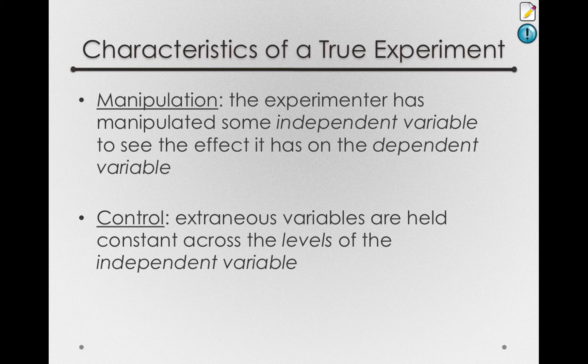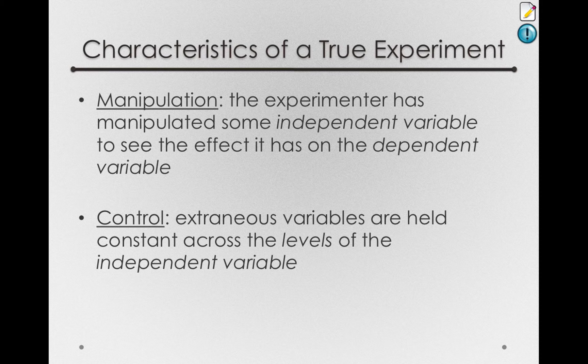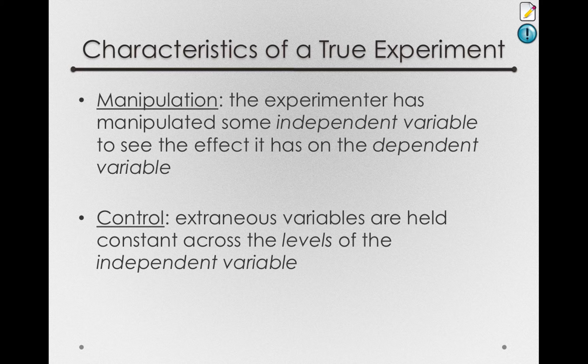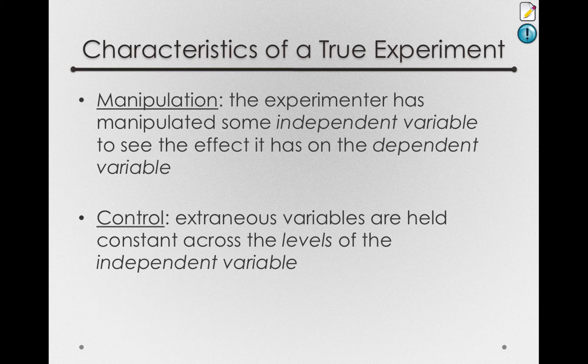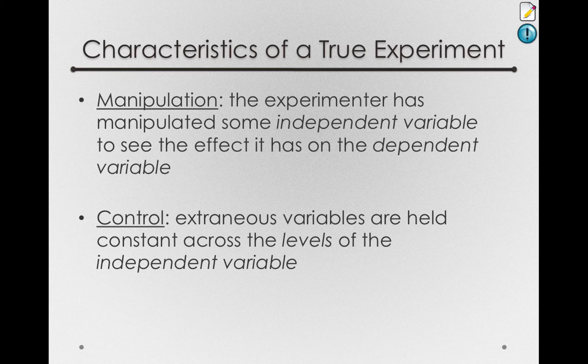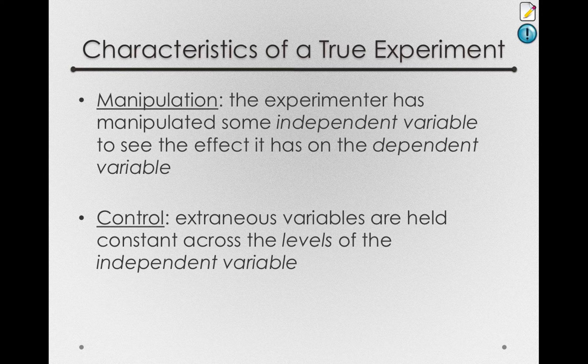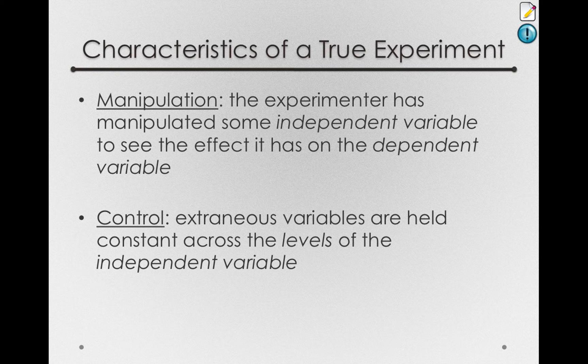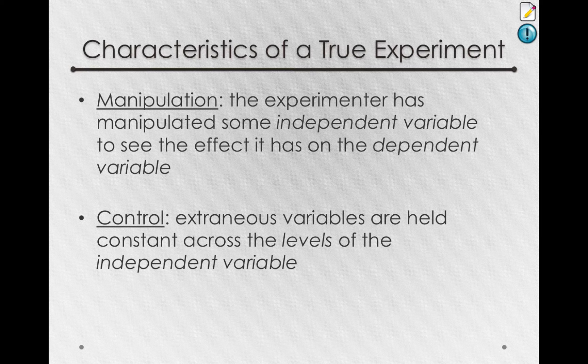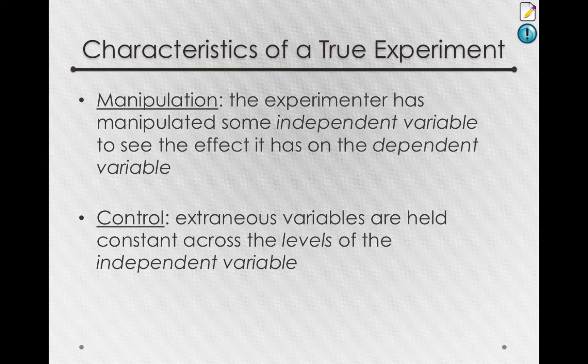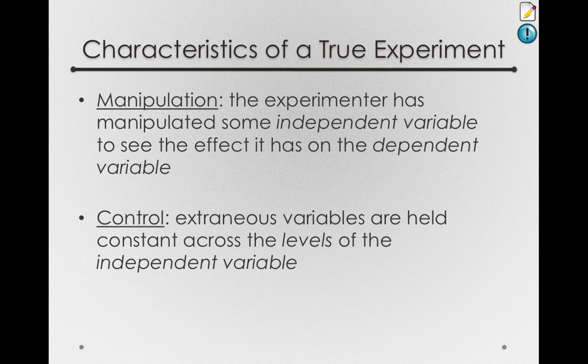Remember, the levels of the independent variable are just the conditions we have, so whether somebody got caffeine or not before the exam. What we're stating here is that we hope every other variable that relates to exam score is pretty much the same in our group of students who got caffeine and the other group who didn't. In that way, we have controlled the extraneous variables so that we get a unique or specific measure of the effect of the independent variable.